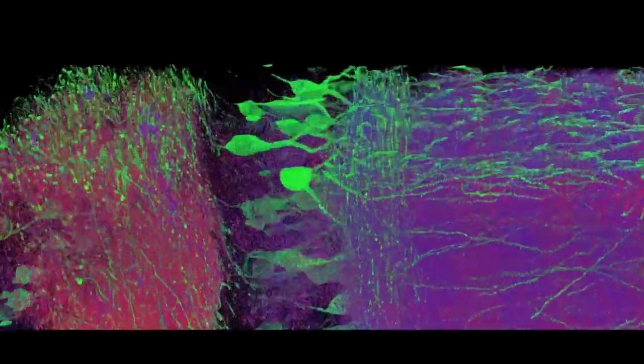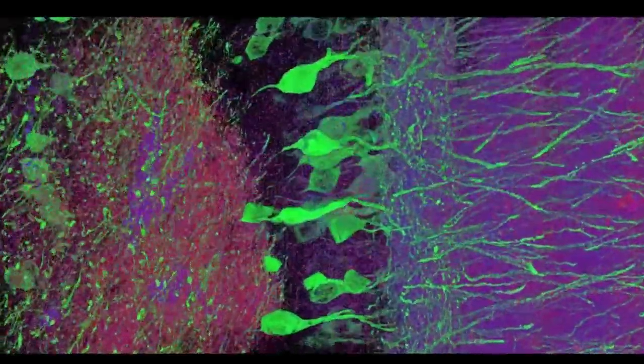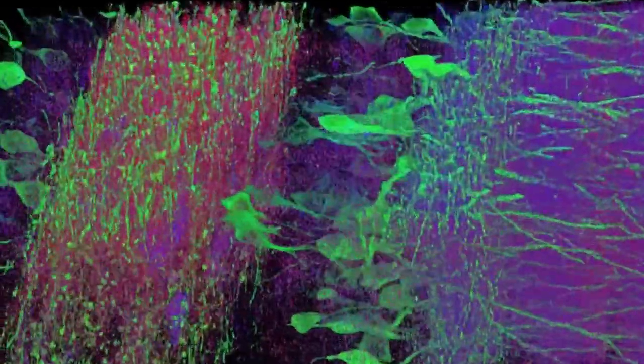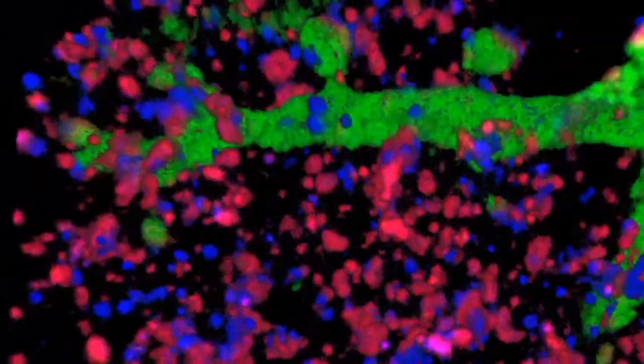With expansion microscopy, we can image whole 3D volumes at a resolution of tens of nanometers. What's cool about this is that you actually can start to try to navigate brain circuits. You can scan large chunks of brain tissue, but with nanoscale precision.